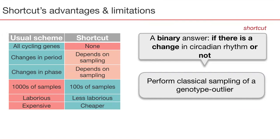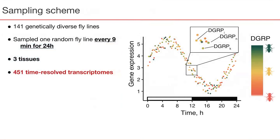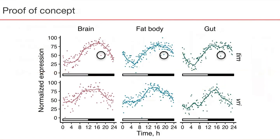In our study, we applied this shortcut to a population of 140 genetically diverse fly lines and sampled three tissues from every line just once, resulting in still an impressive number of 451 time-resolved transcriptomes. This slide shows that indeed sinusoidal curves of expression of two major circadian genes, timeless and period, are recapitulated from static transcriptomes. You can even see an outlier circled in black.